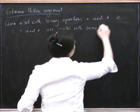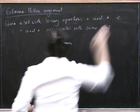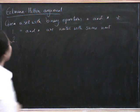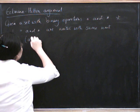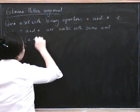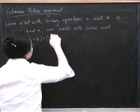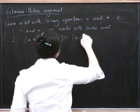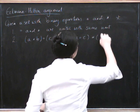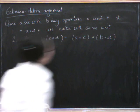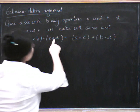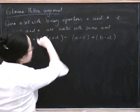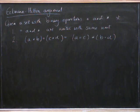and secondly that one of them distributes over the other, which is to say that A star B circle C star D equals A circle C star B circle D. So what's happened here is that we've switched the order of the star and the circle, and in doing so we've switched around these middle two things that we're multiplying together.